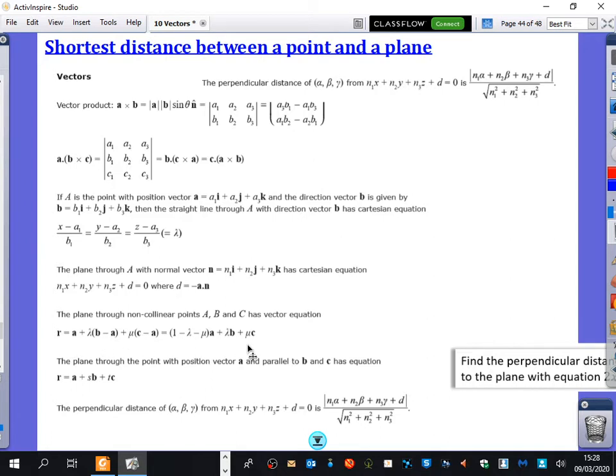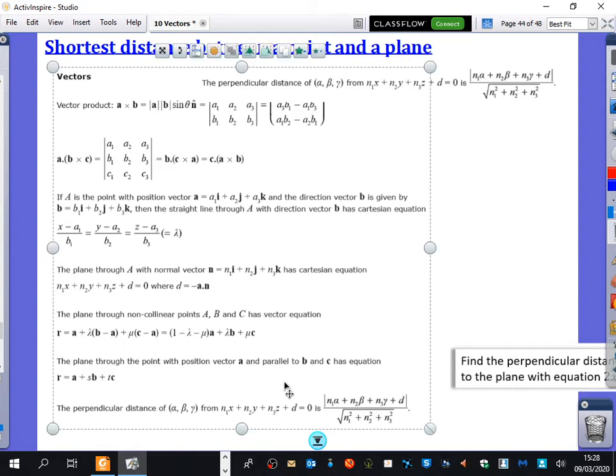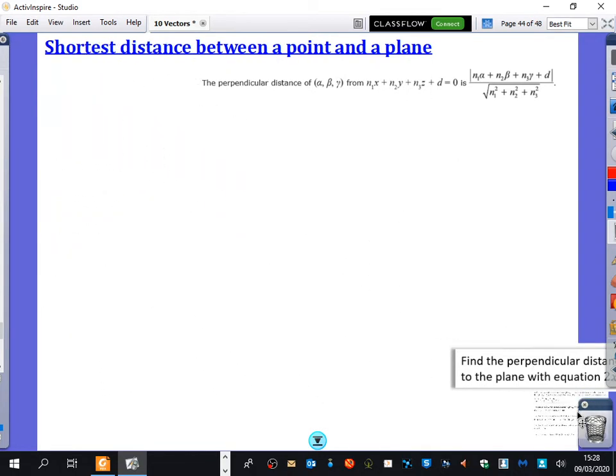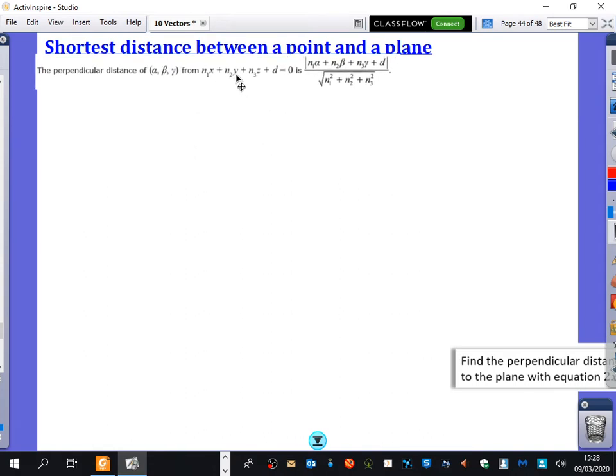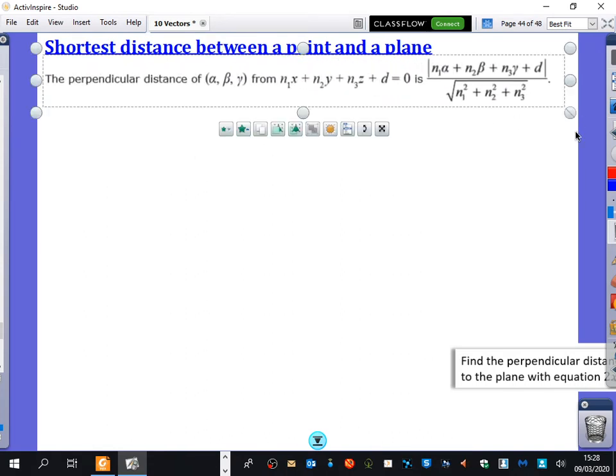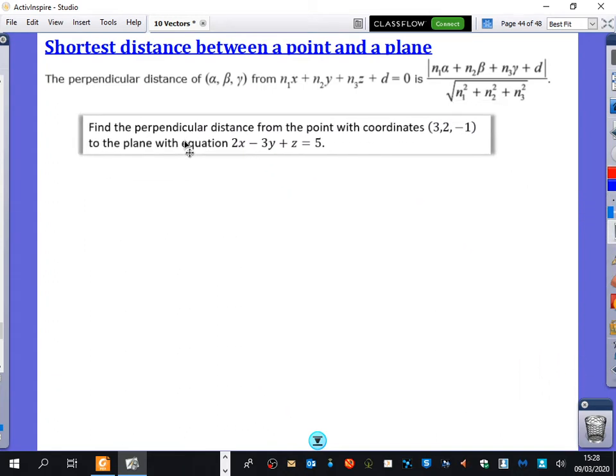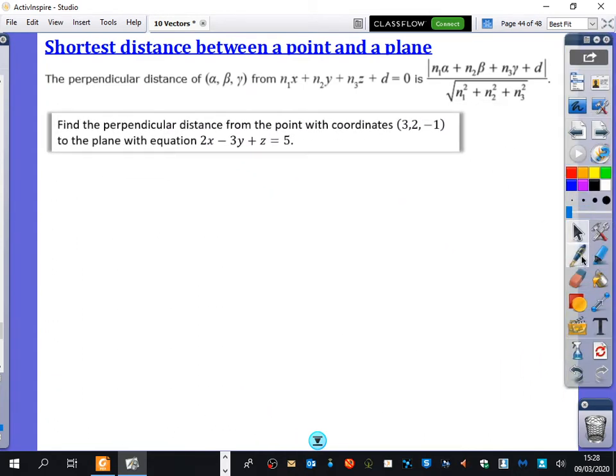This stuff we would never use because it's ridiculously over the top. But then there's a section at the bottom that says the perpendicular distance of alpha, beta, gamma from N1X1 plus N2Y plus N3Z plus D equals zero. And then it's got a formula here about how you find the shortest distance between a point and a plane.